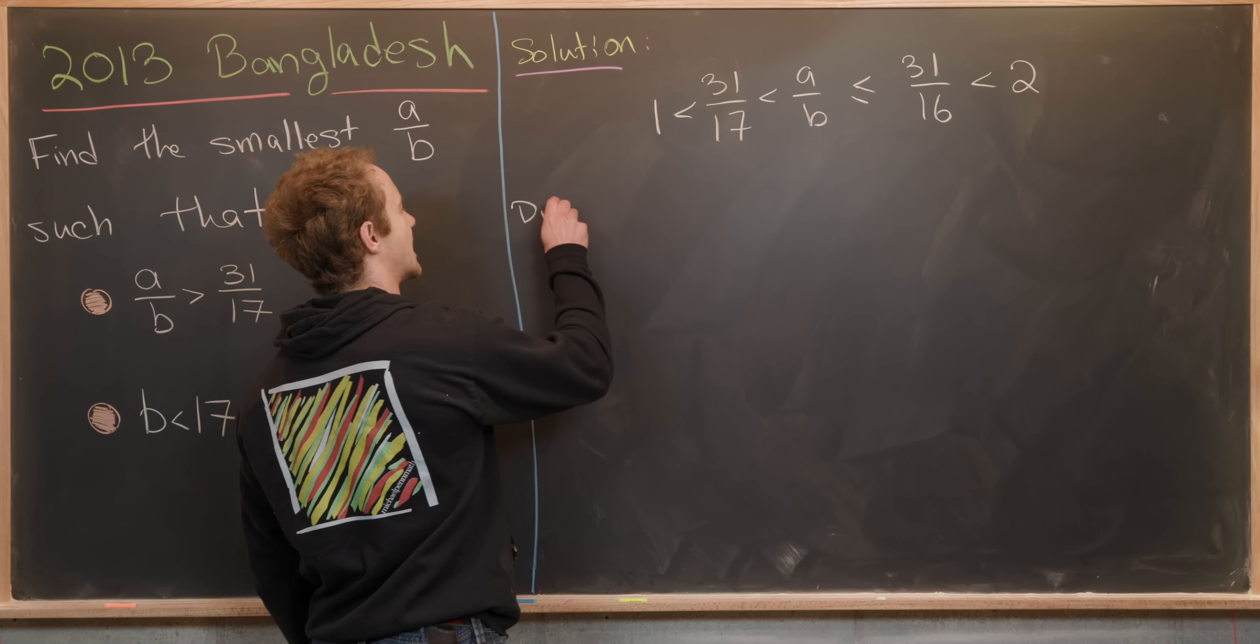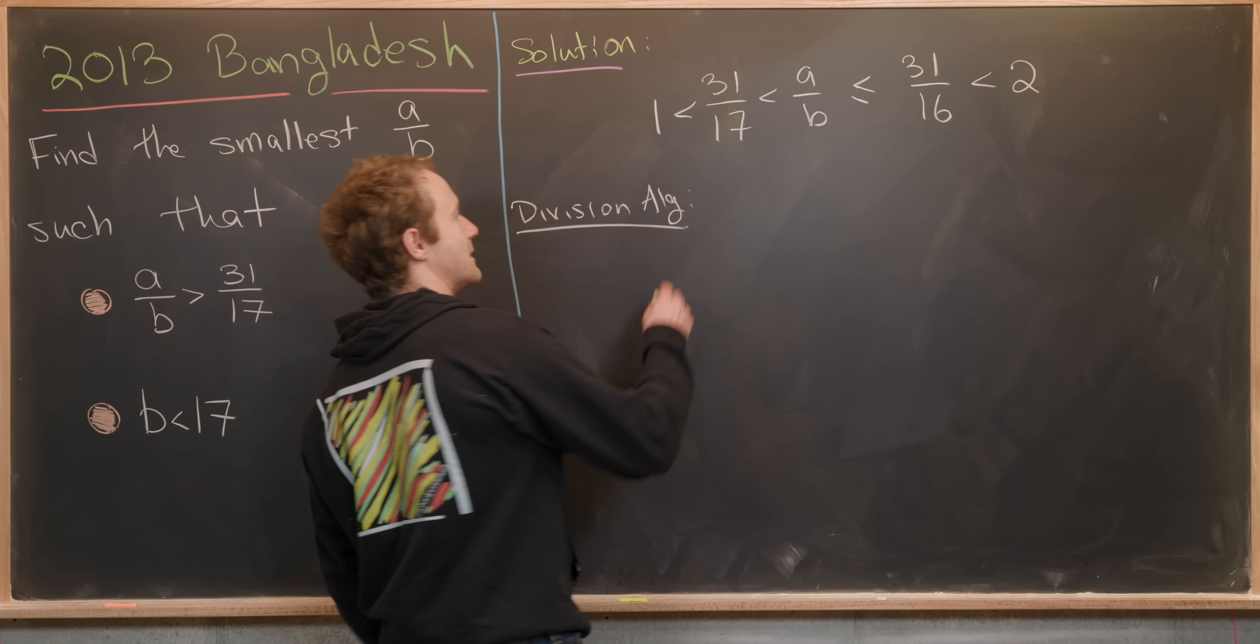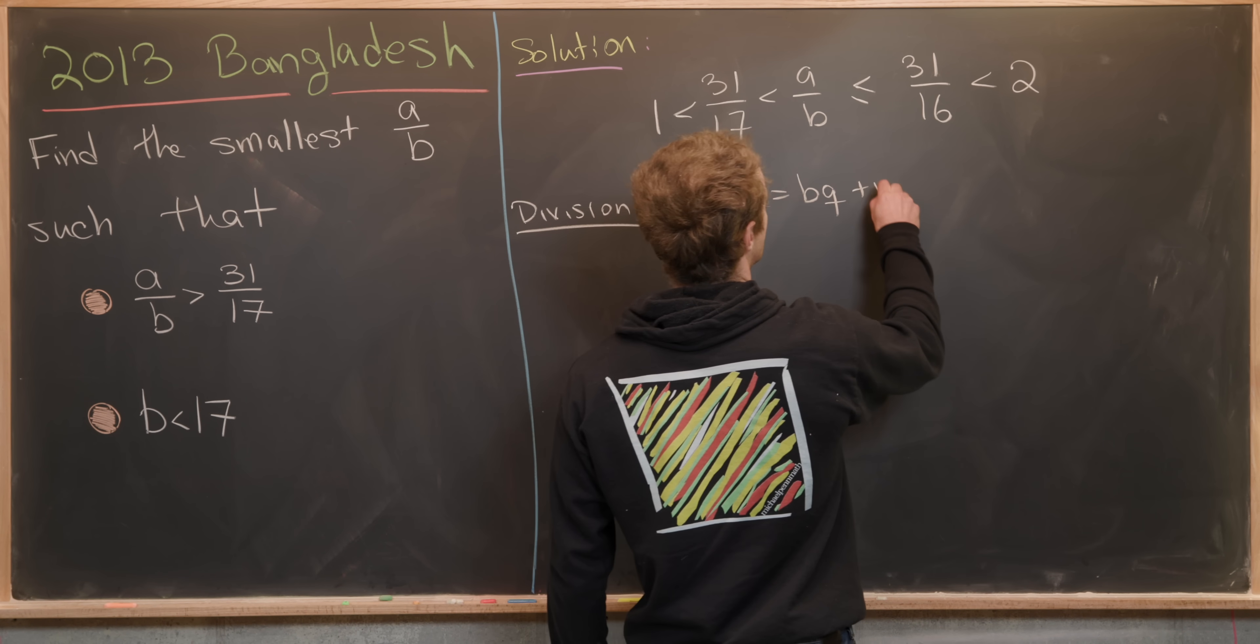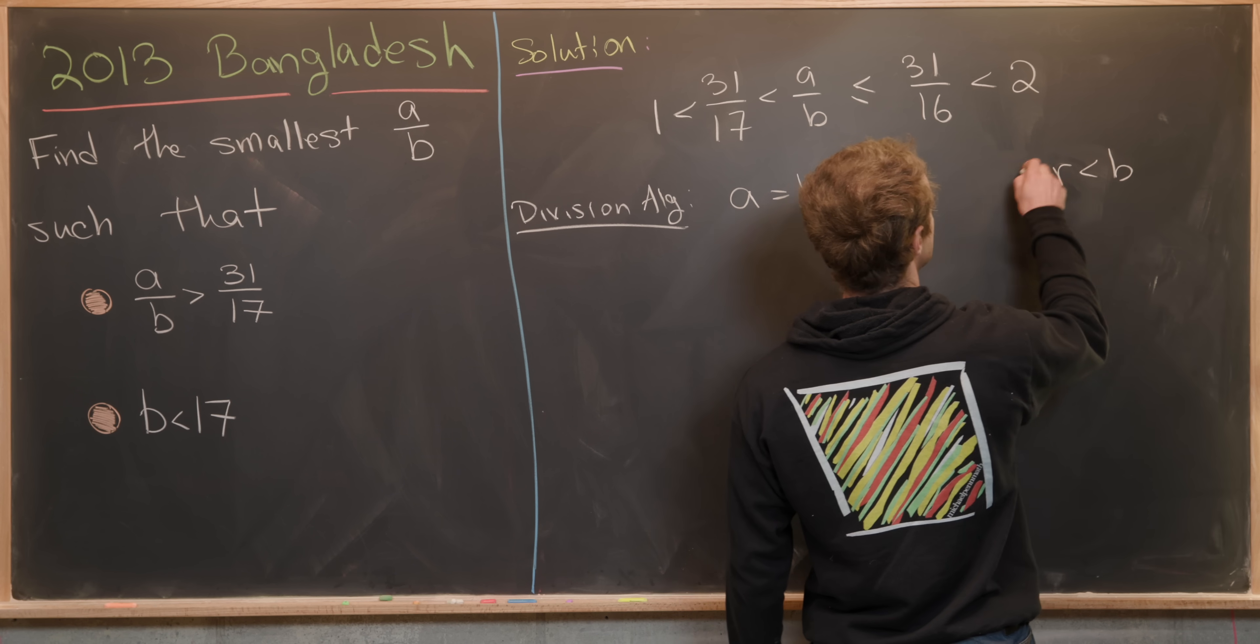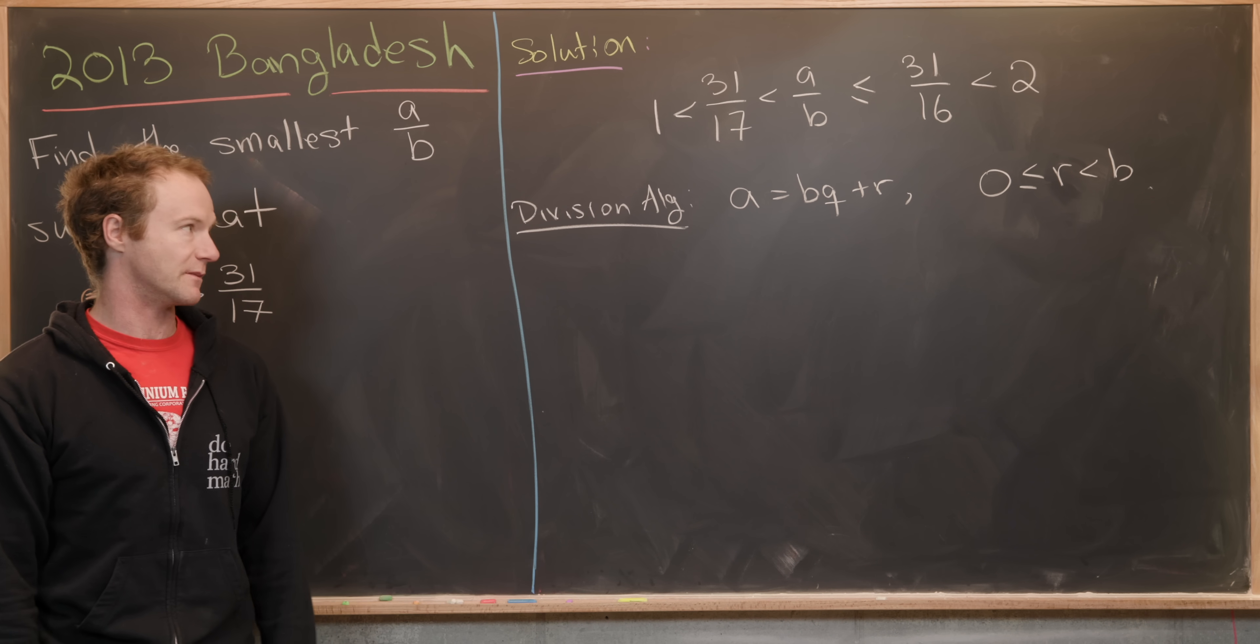Next we can use the division algorithm to divide A by B with quotient and remainder. We'll write A as B times Q plus R, where R is strictly less than B but is bigger than or equal to 0. That's just quotient with remainder.